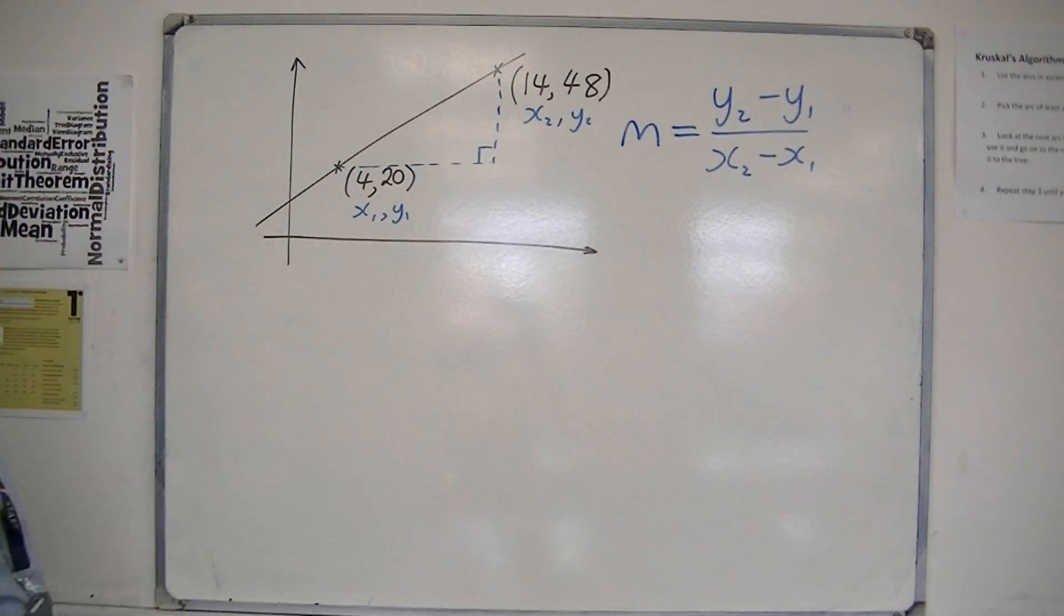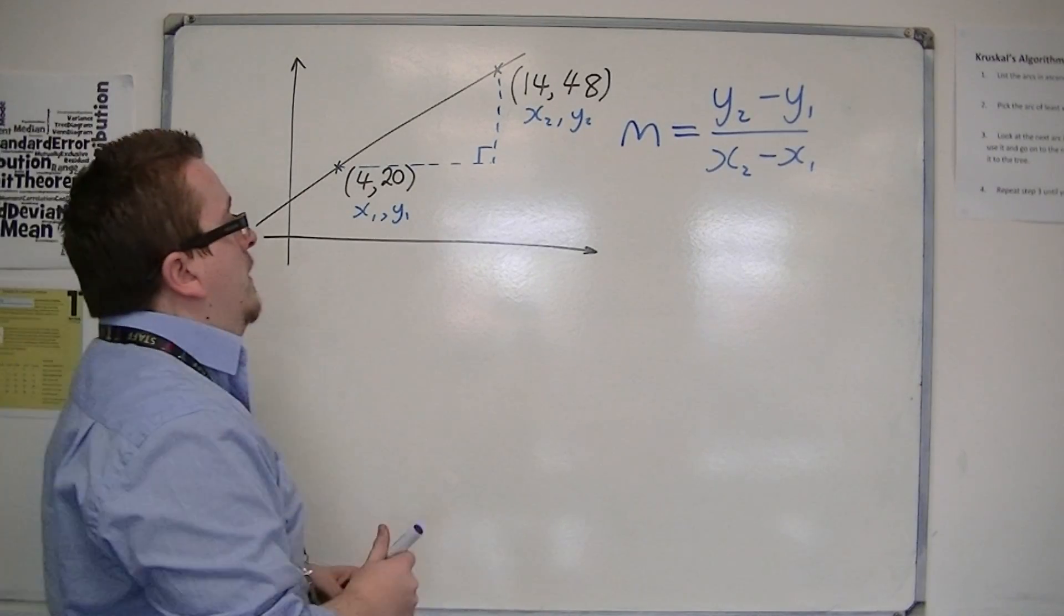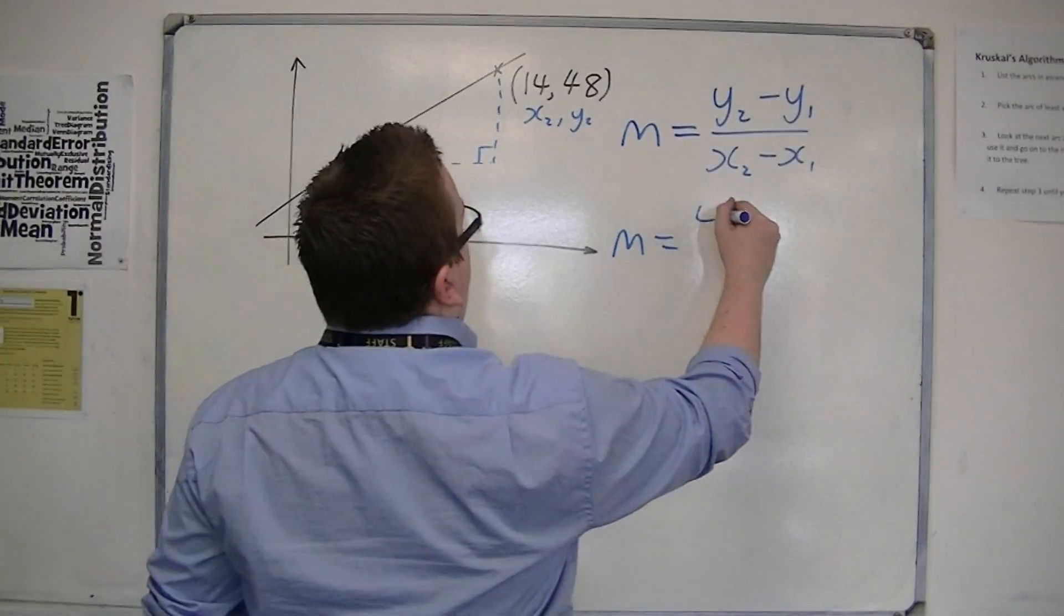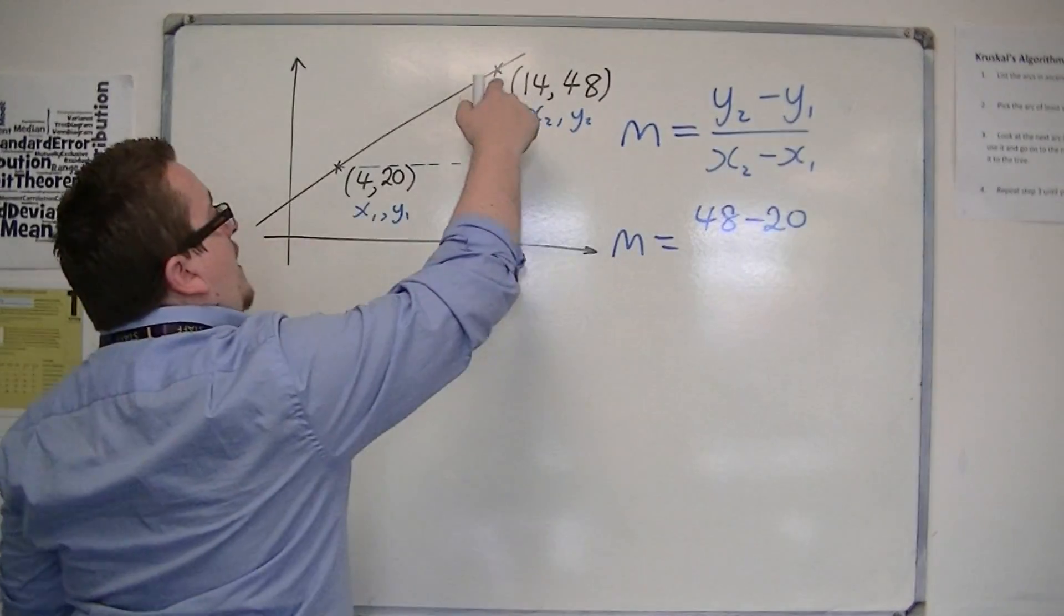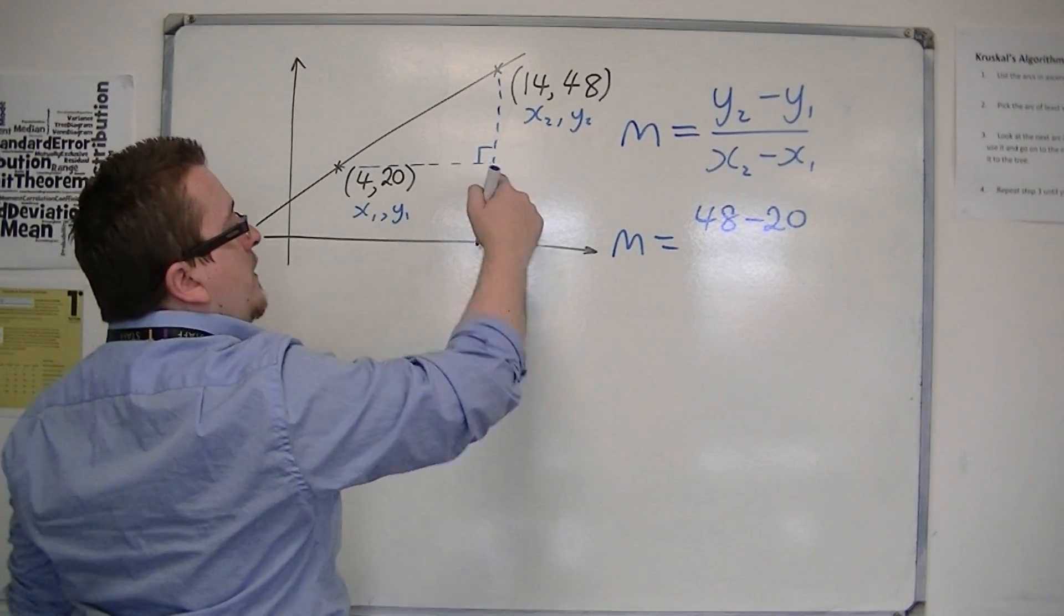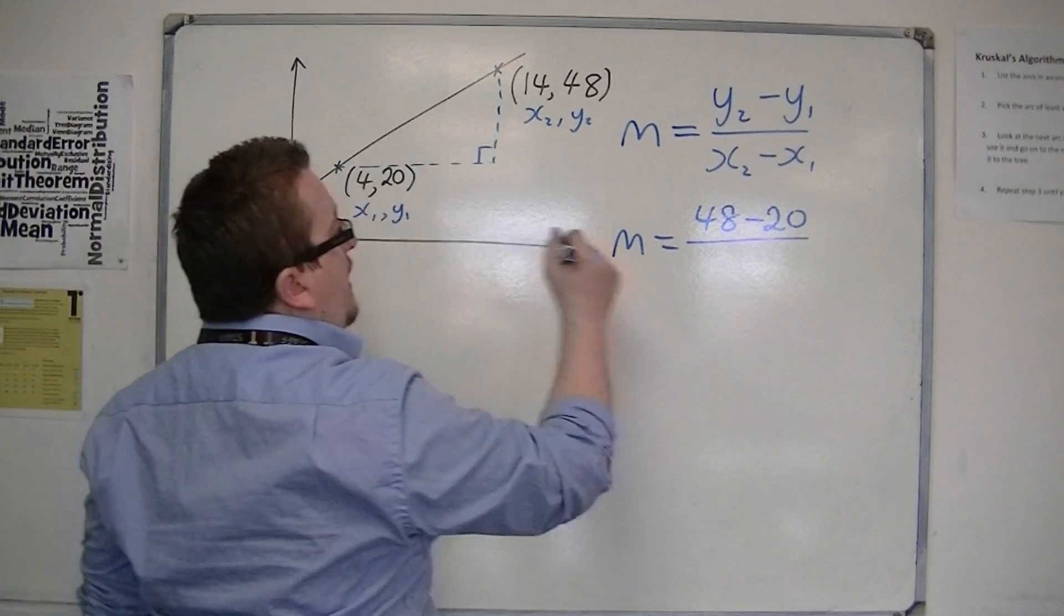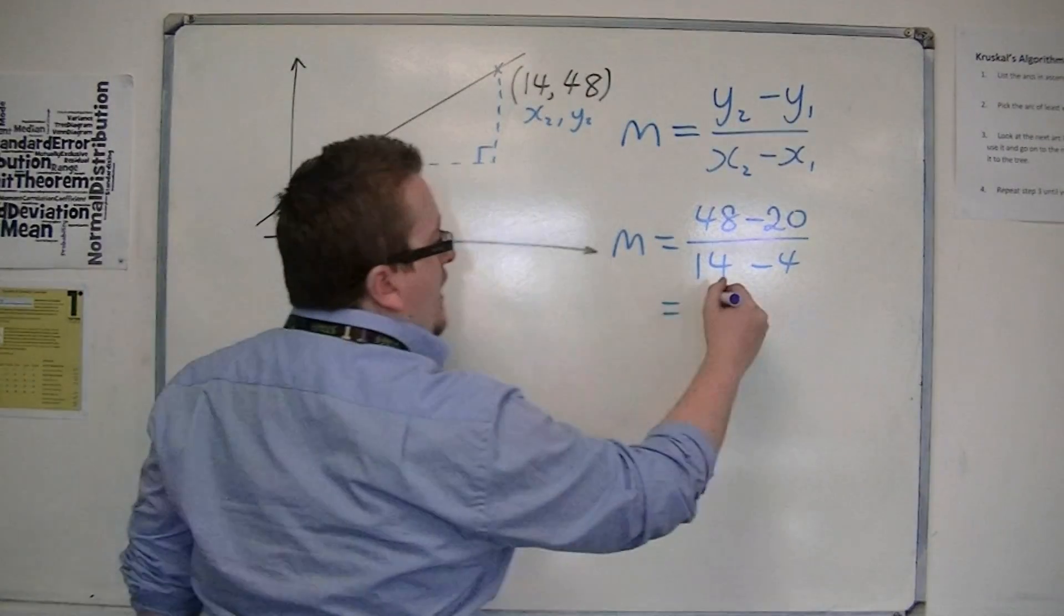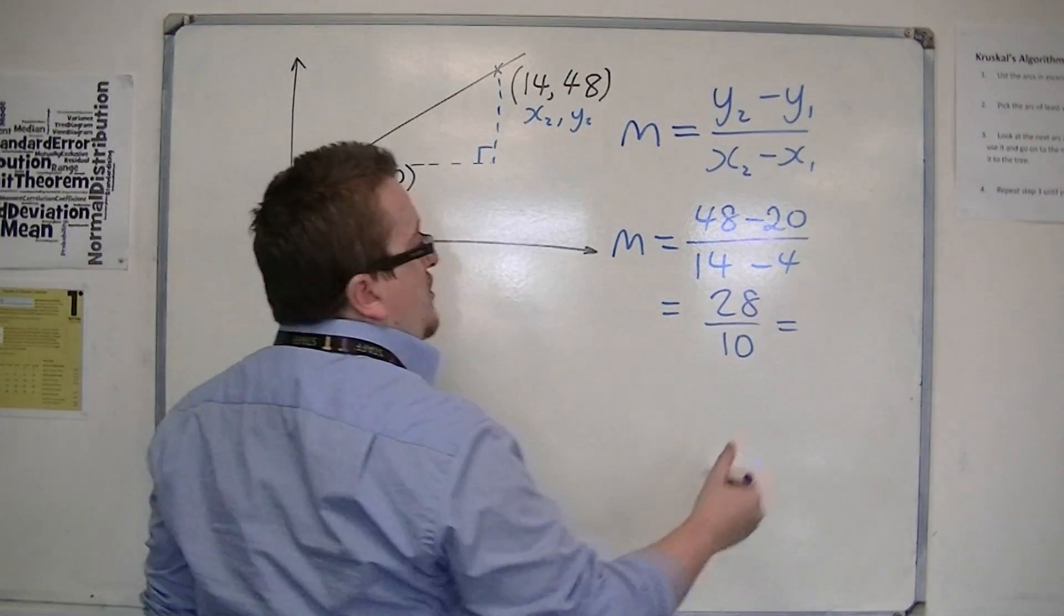You can label them round the other way if you like, but it doesn't really matter. So we have m, the gradient, is 48 take away 20, so that's the height of the triangle, divided by the base of the triangle, which is 14 take away 4. So you get 28 over 10, which is 2.8.